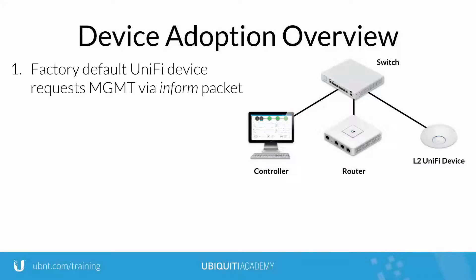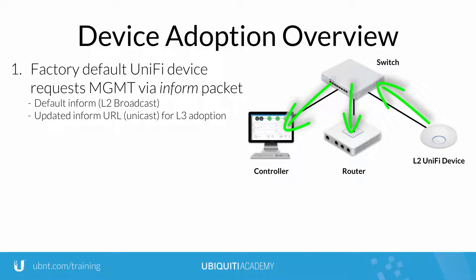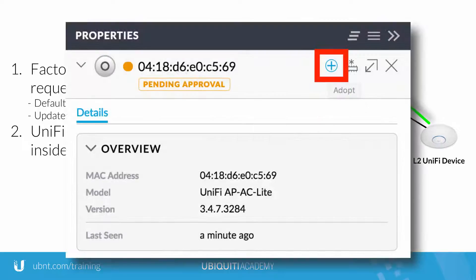While in its factory default state, and typically with a DHCP assigned address, a Unify device informs the controller of its network IP and reachability through beacon announcements. When located on the same local network, the Inform beacon announces via Layer 2 broadcast, resulting in immediate discovery at the local controller.